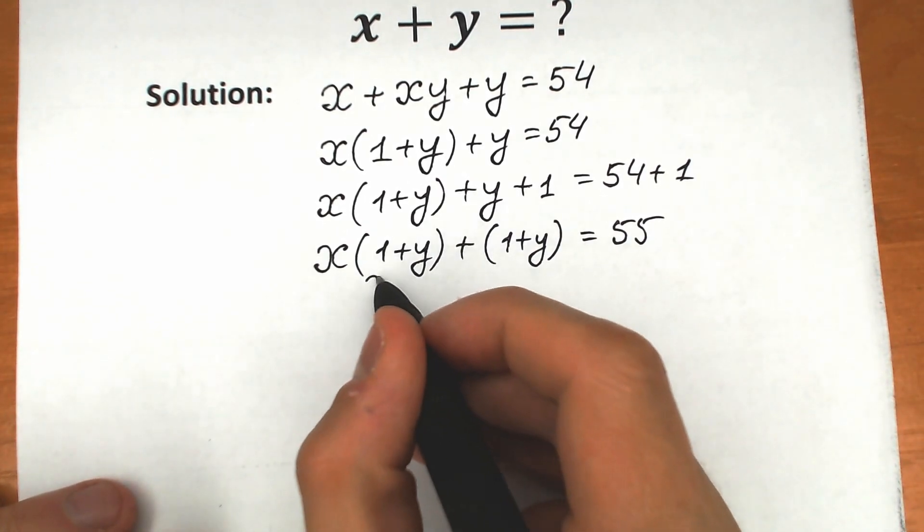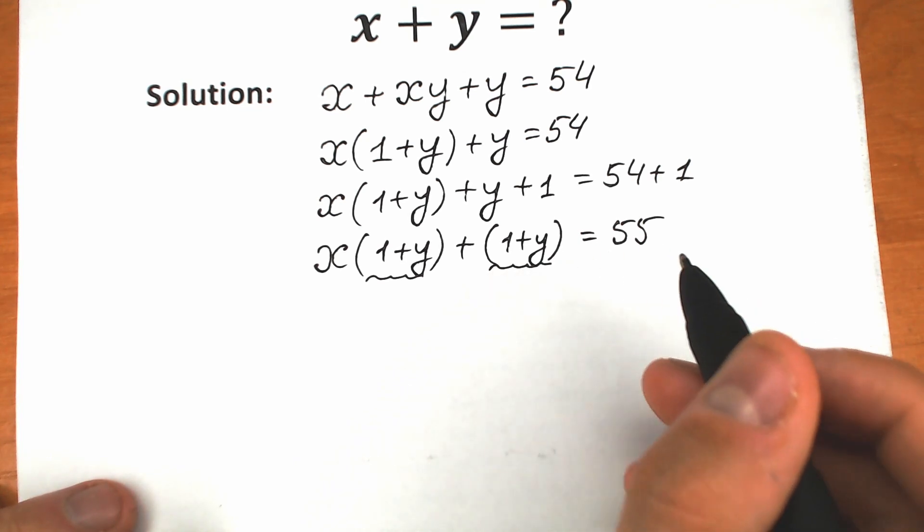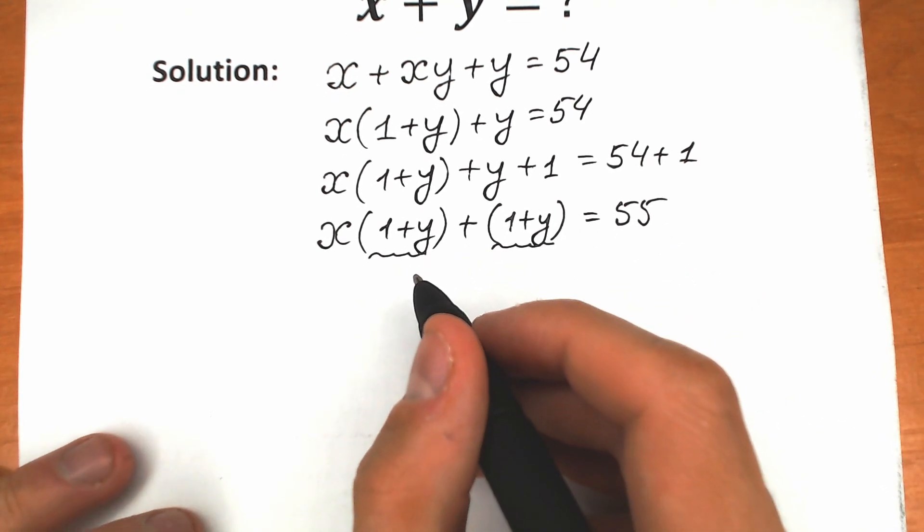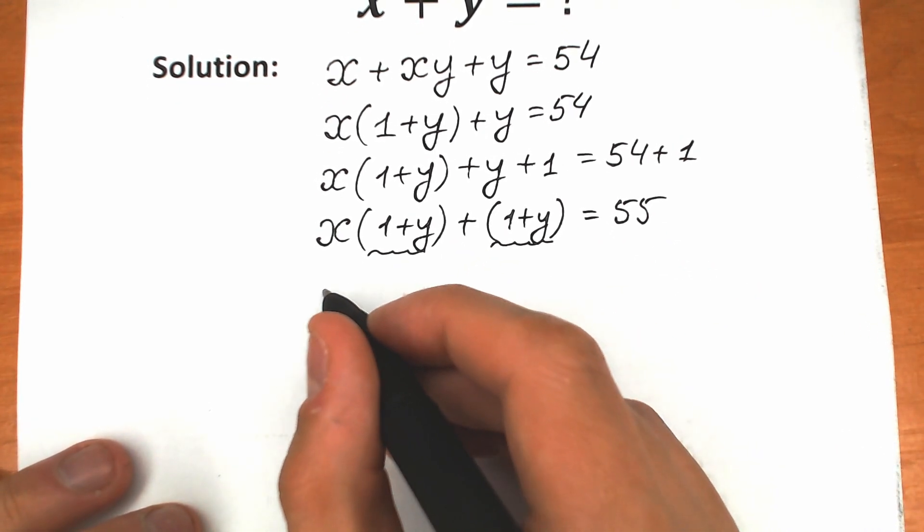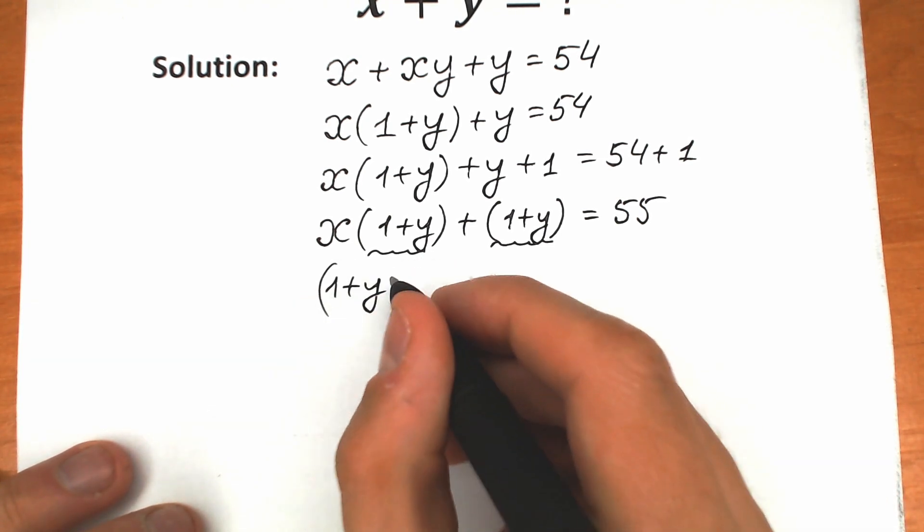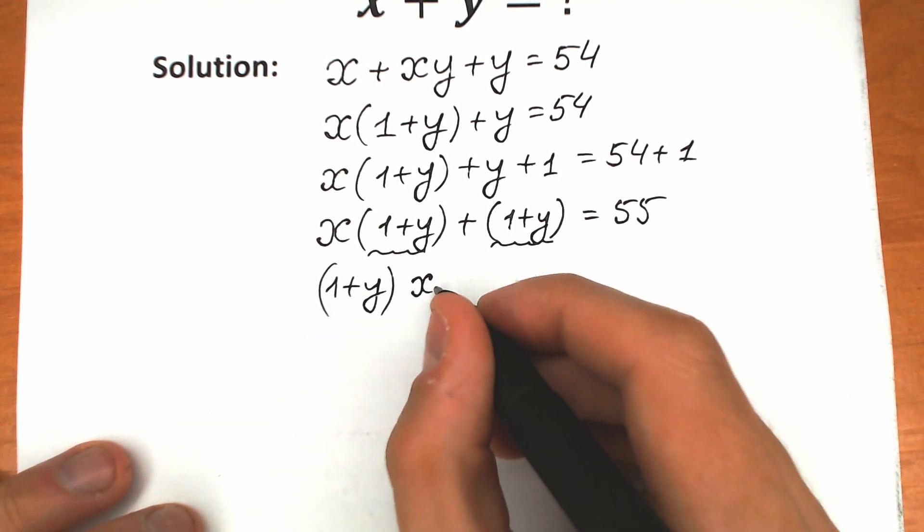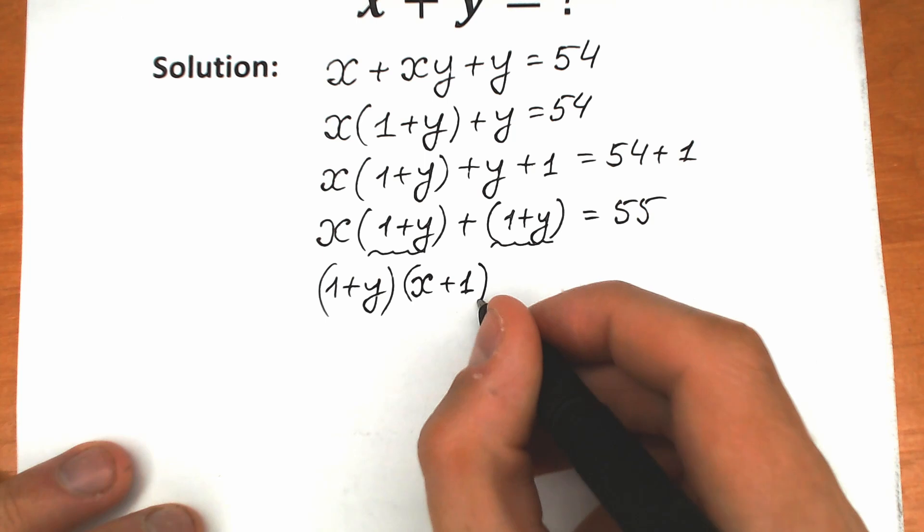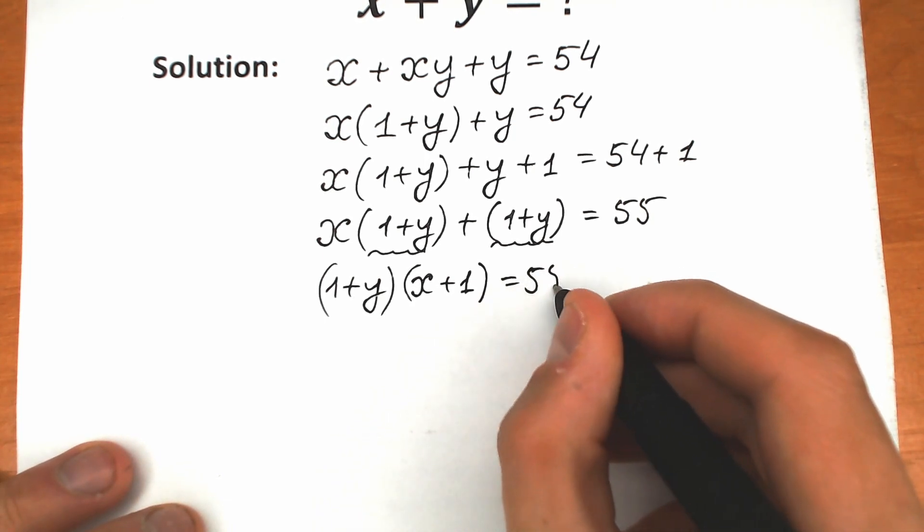Let's factor 1 plus y from here and from here, because we have the same expression. So we have 1 plus y times x plus 1, equals 55.